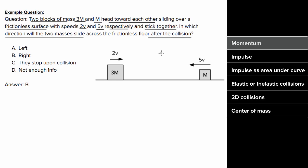To figure this out, we could just ask what direction is the total momentum of the system initially. Since momentum is going to be conserved, that'll have to be the direction of the momentum finally. So the momentum of the 3m mass is going to be the mass, which is 3m, times the velocity, which is 2v. So we get a momentum of 6mv.